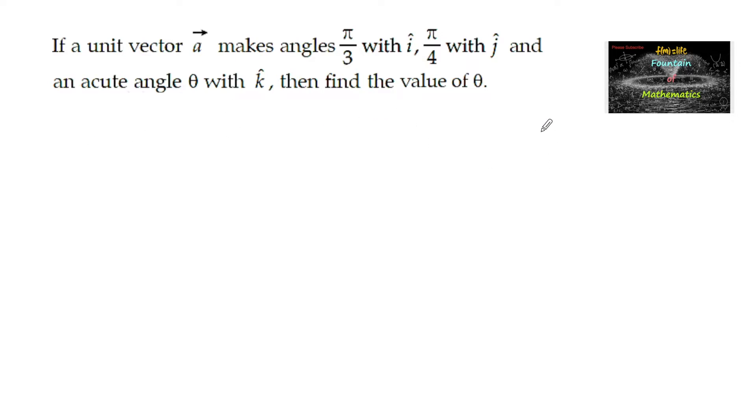Since we know that i, j, k are the unit vectors along the x-axis, y-axis and z-axis respectively, we can say that vector A makes an angle with x-axis. The direction cosines: let α = π/3, which makes an angle with x-axis, that is i cap. And β = π/4, which makes an angle with y-axis, that is j cap. And an acute angle θ, say γ = θ, which makes an angle with z-axis, that is k cap.